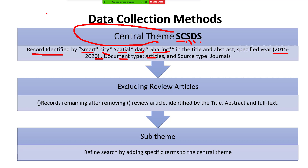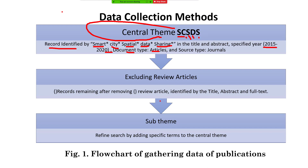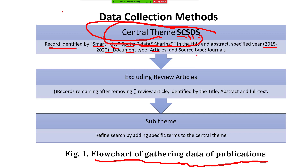In the title and abstract search, you must specify the year range, document type — such as article — and source type, such as journal, then exclude review articles. After exclusion, refine the search by adding specific terms to the central theme. There is a flowchart for gathering publication data: find the central theme, then exclude reviews and sub-themes to refine the data collection.